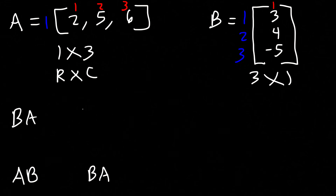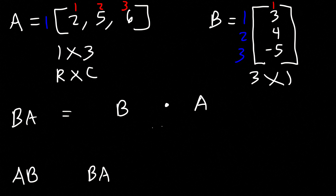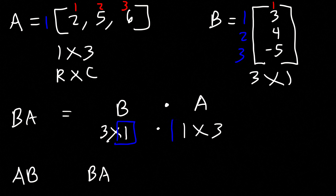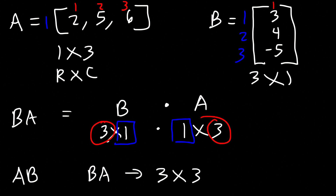Now what about B times A? Matrix B is a 3 by 1 matrix and matrix A is a 1 by 3 matrix. The number of columns in B equals the number of rows in A, so we can multiply them. The order of BA is going to be 3 by 3, while AB is a 1 by 1 matrix. Now let's confirm that.